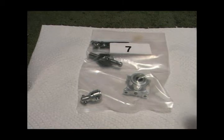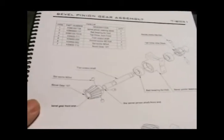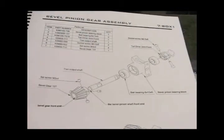On to bag 7 now, which is the bevel pinion gear assembly, and you can find the instructions for that on page 14 of the manual.